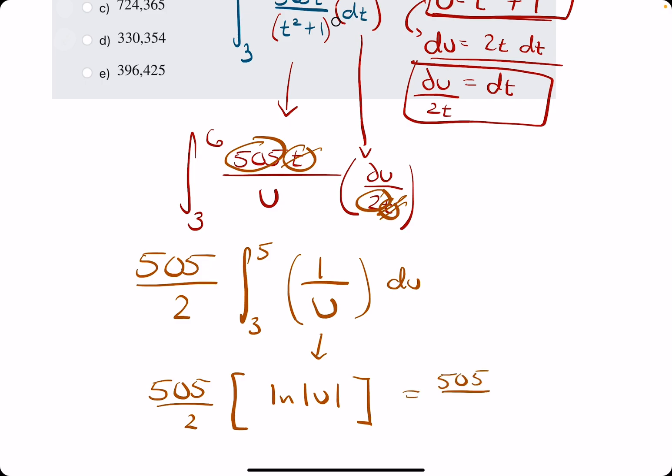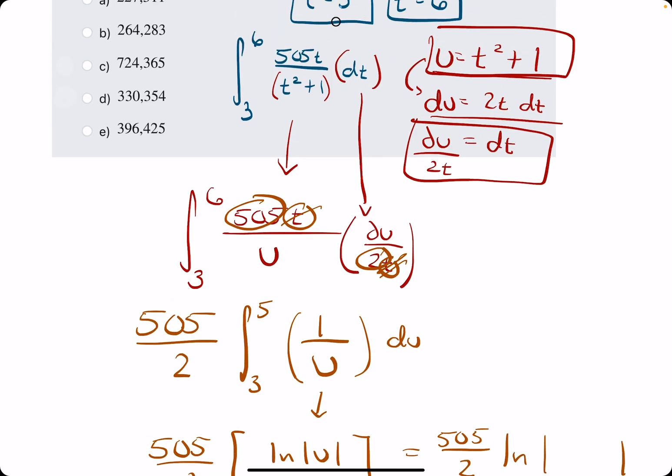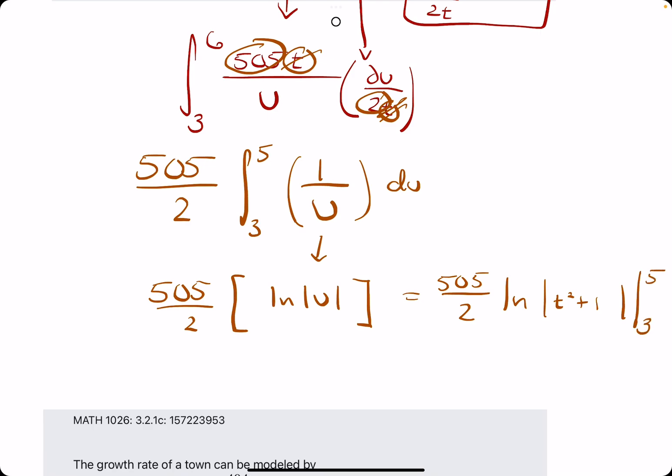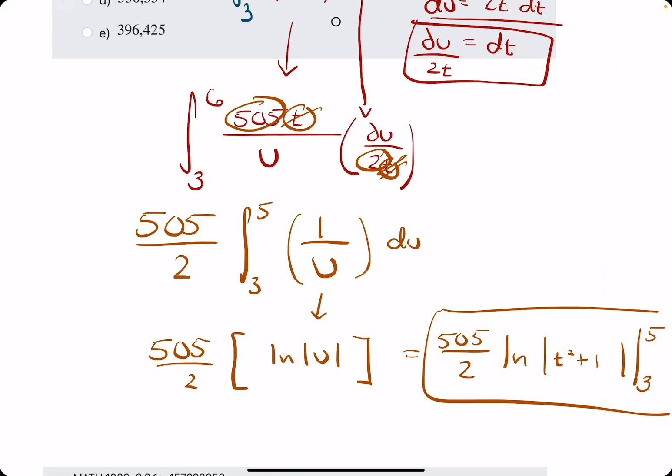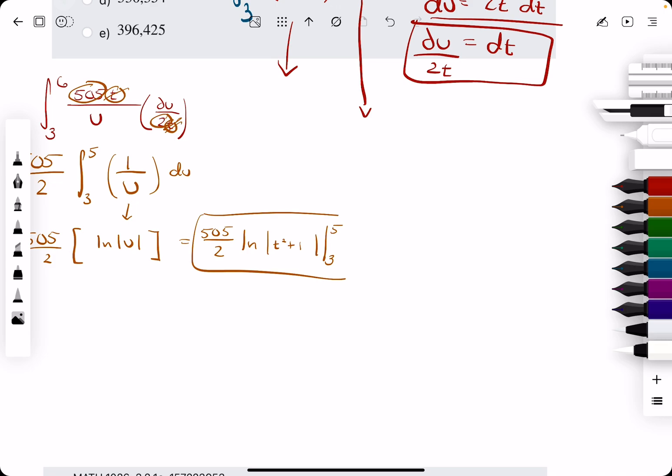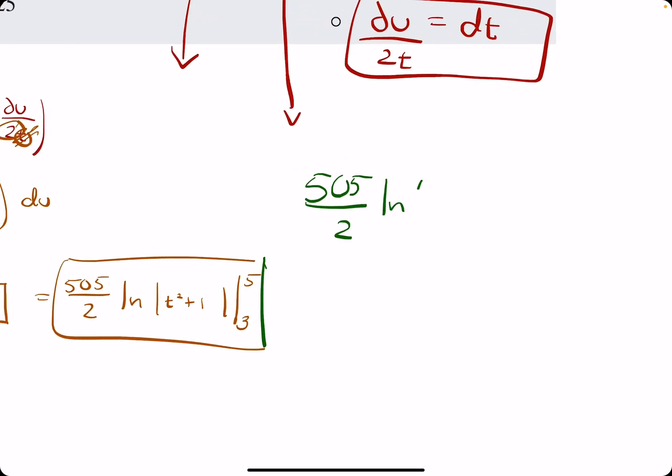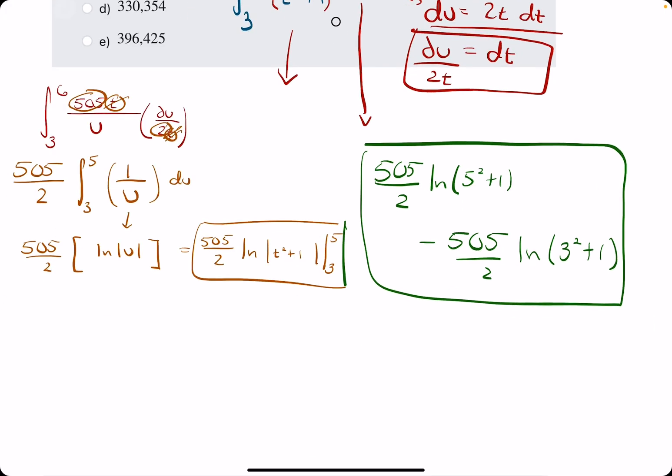Before we evaluate this from 3 to 6, don't forget to plug back in your U and get it back in terms of T. So T squared plus 1. And we're evaluating this from 3 to 6. Keep in mind when we're evaluating from something to something, a lower bound to an upper bound, we want to plug in the upper bound first and then the lower bound second. Let's see if I can shrink all this down here. Make some space. All right, so again, we are plugging in 6 first. So we'll have 6 squared plus 1. And from that, we are subtracting the evaluation for 3. So 505 over 2 ln of 3 squared plus 1. So this is what we will evaluate using Desmos.